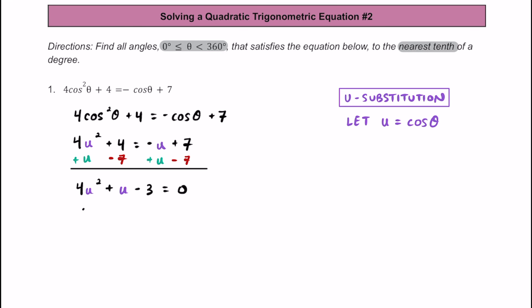Next, we can go ahead and set up our two binomials. This one is going to be factorable, so we're going to set these binomials equal to zero. If we factor, this is going to factor into four u minus three, and then the other binomial is going to be u plus one.